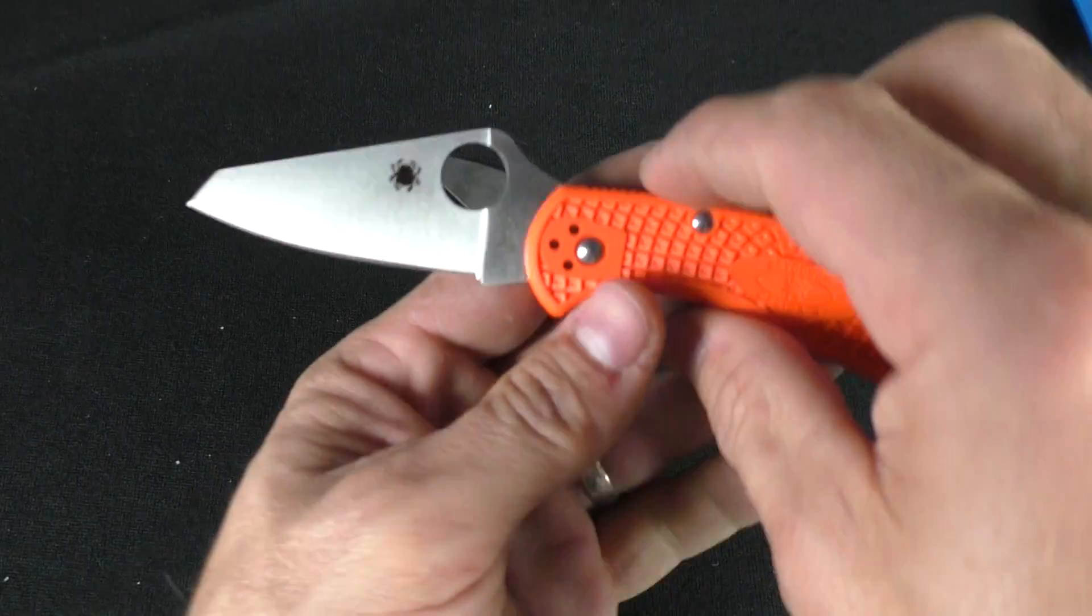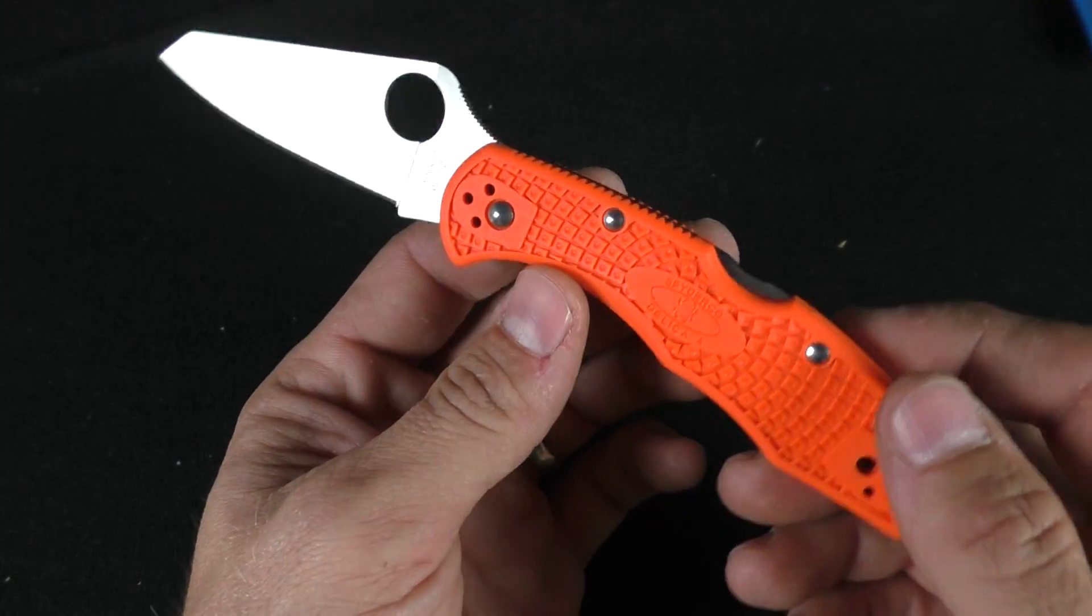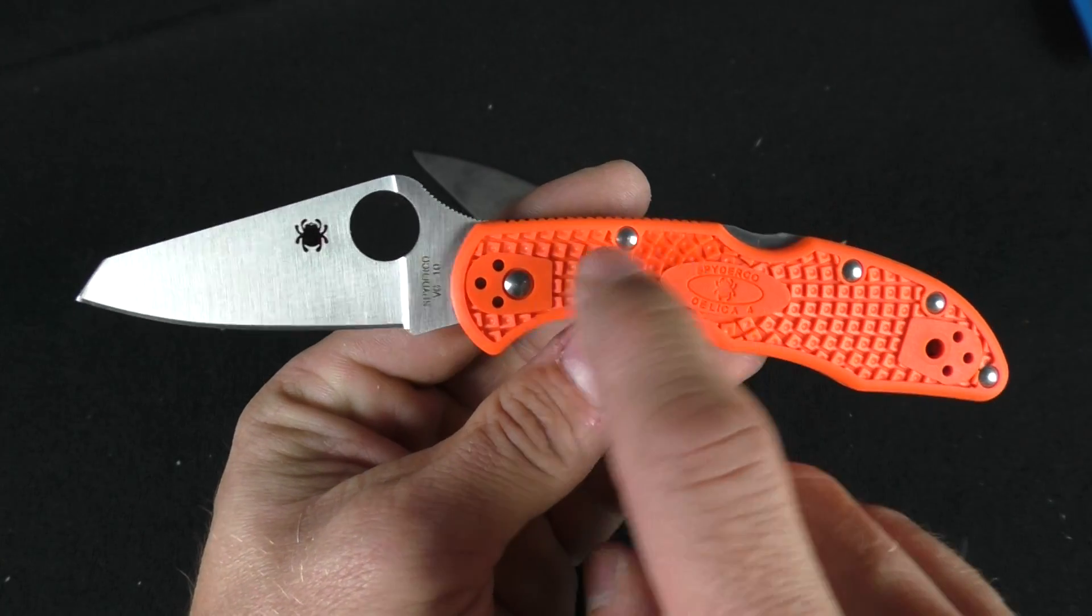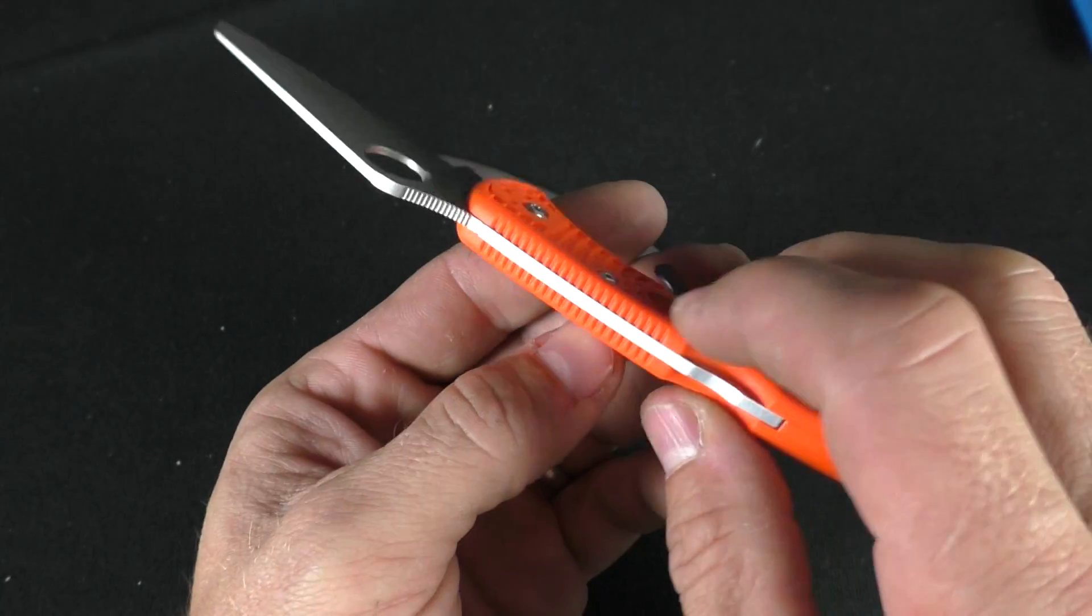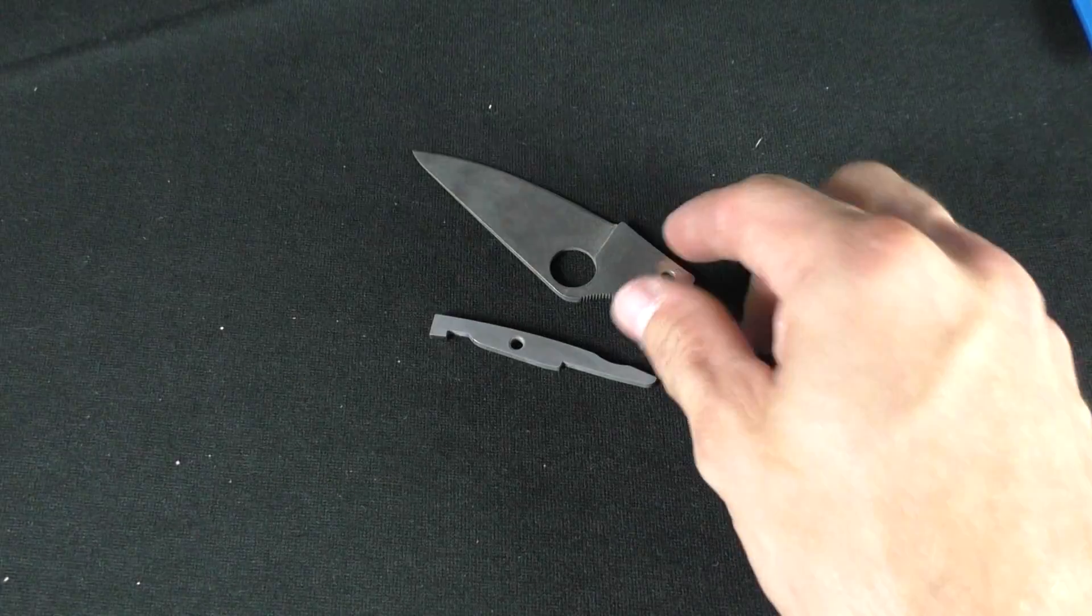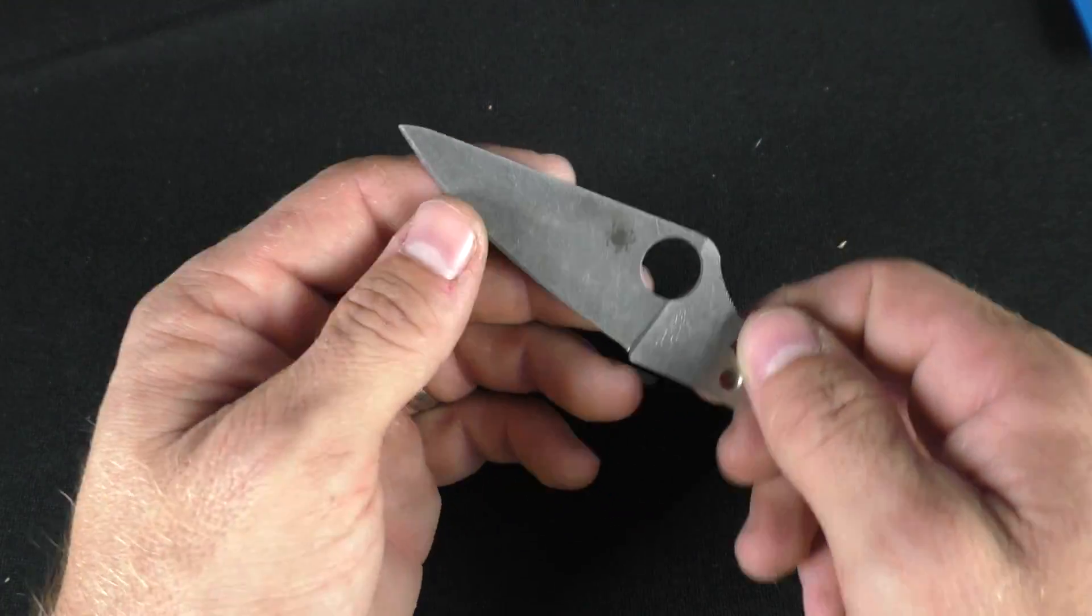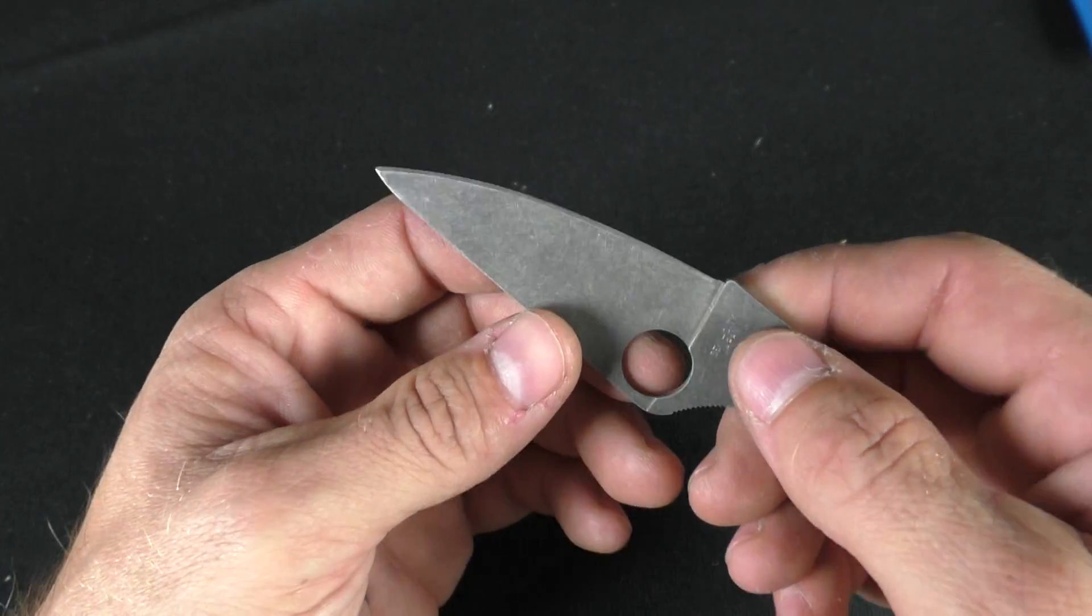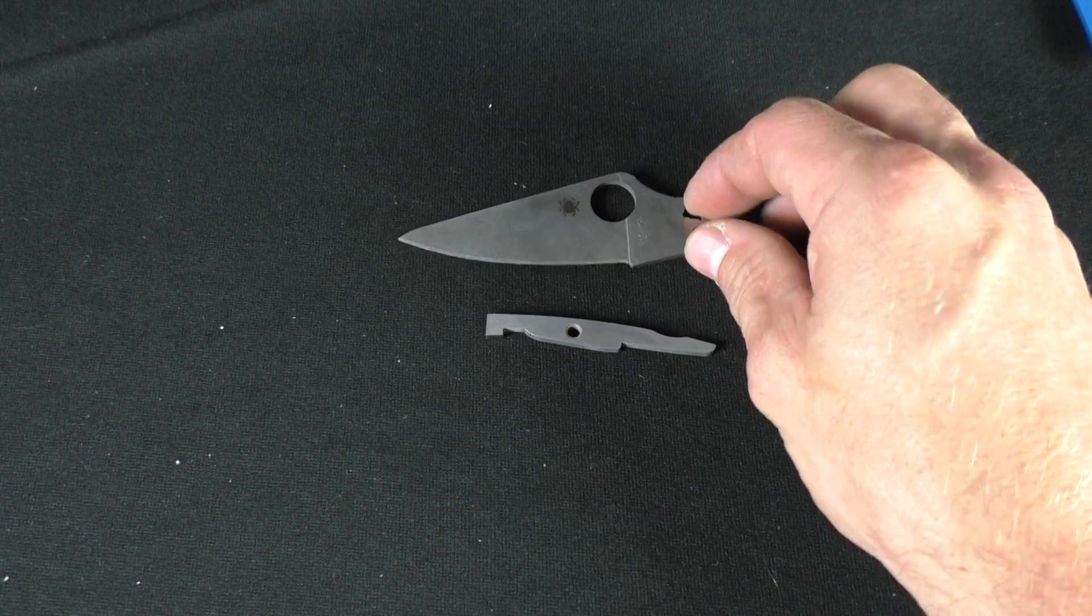Once that's done everything gets cleaned up and it's reassembled the way that it was when you first buy a Delica. We test them, oil them, everything like that. Your adjustments are here and here at your pivot and your lock bar screw. Once that is done they go and have the blades resharpened razor sharp and then we list them on the website.